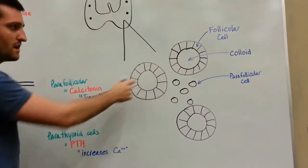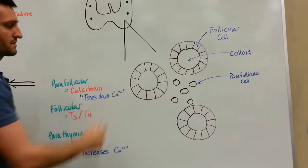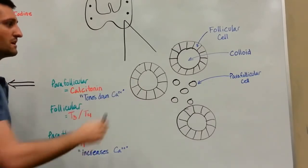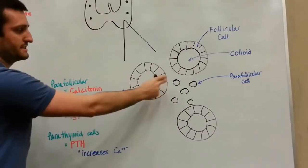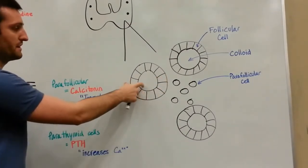In the very middle you're going to see these colloid lakes, and those colloid lakes are going to store the synthesized hormone of your thyroid gland. Surrounding that colloid lake you're going to see cells, and those are going to be called follicular cells.